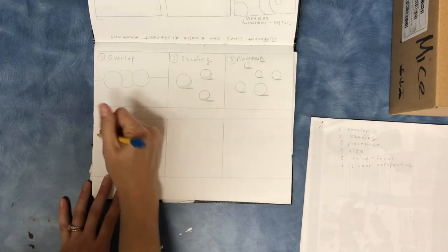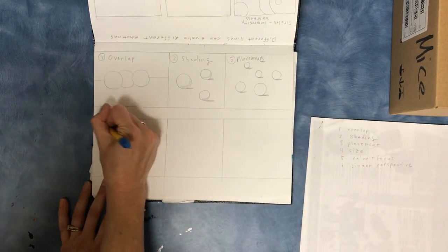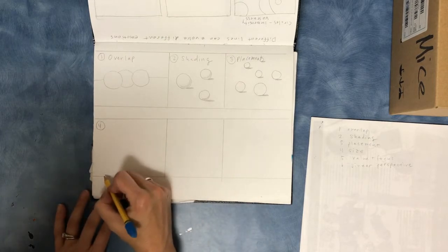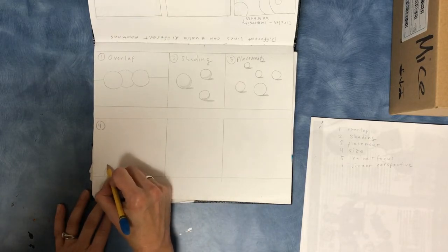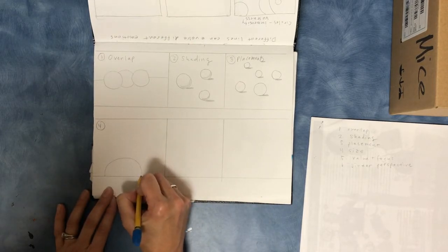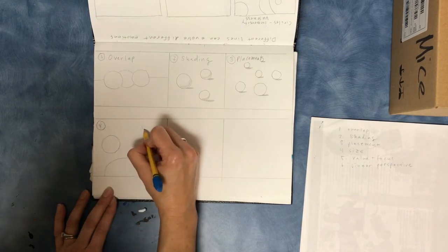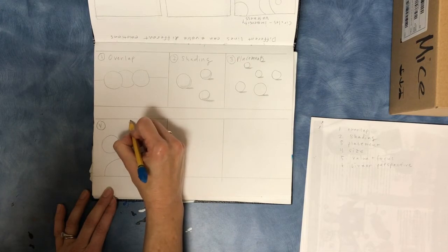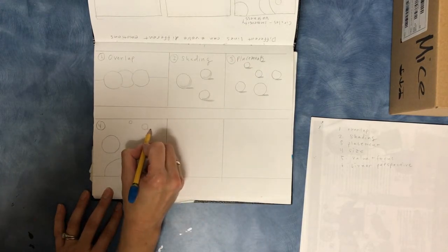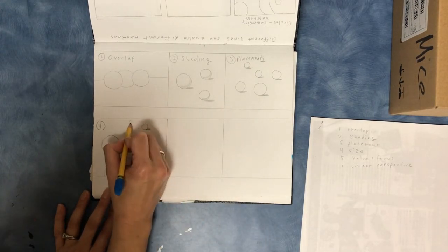And number four is size. So that just means you're going to have the big shapes in the front and the little shapes in the back. And same thing, you're just going to add a little shadow.